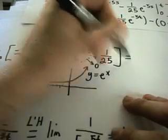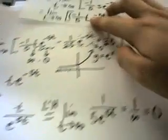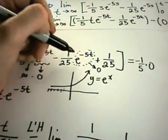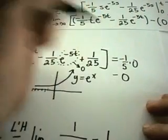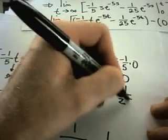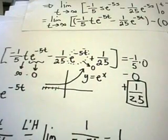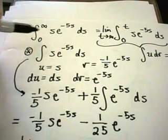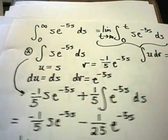So it turns out that the infinity times zero in this case equals zero. Going back to our expression: we have negative one-fifth times zero — which we just justified — minus zero, plus one over 25. So our solution works out to be one over 25, and we would say that this original integral is, in fact, a convergent integral.